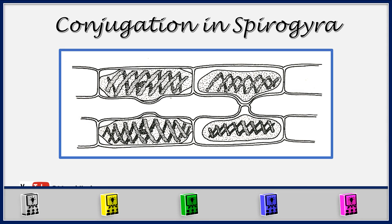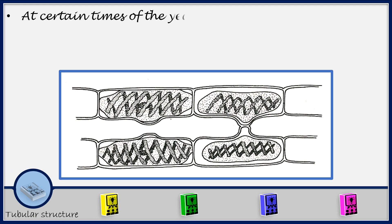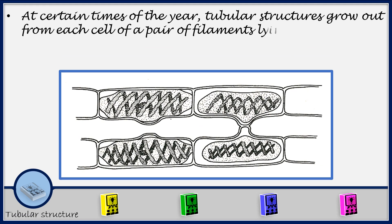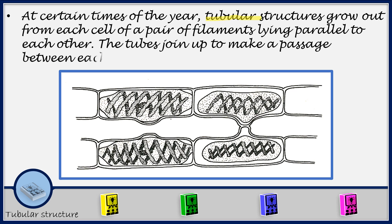Hello, my friend. My name is Joshua Mgavi. I welcome you to conjugation in Spirogyra. At certain times of the year, the tubular structures grow out from each cell of a pair of filaments lying parallel to each other. The tubes join up and make a passage between each cell and each partner.